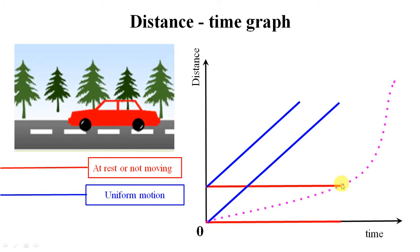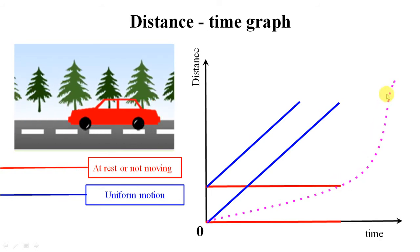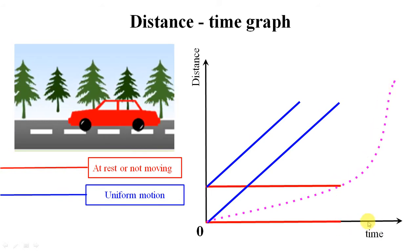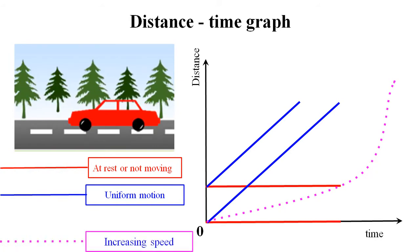The speed increased because in a very short interval of time the body covered a huge amount of distance, compared to the earlier case where the body was taking some time to cover some distance. Here the body covered a lot of distance in a very short interval of time — hence this is an increasing speed case.